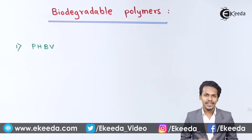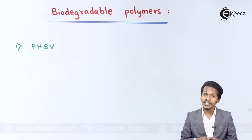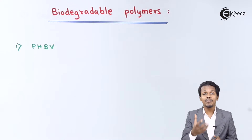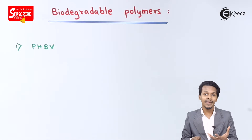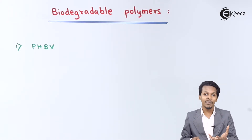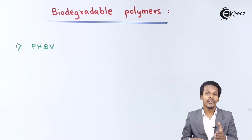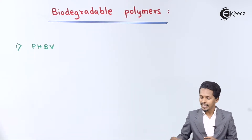Biodegradable polymers are polymers which can be degraded or disintegrated by microorganisms. The by-products produced after degradation by microorganisms do not harm the environment. Polymers that do not cause harm after degradation are known as biodegradable polymers. The first example I am going to talk about is PHBV.